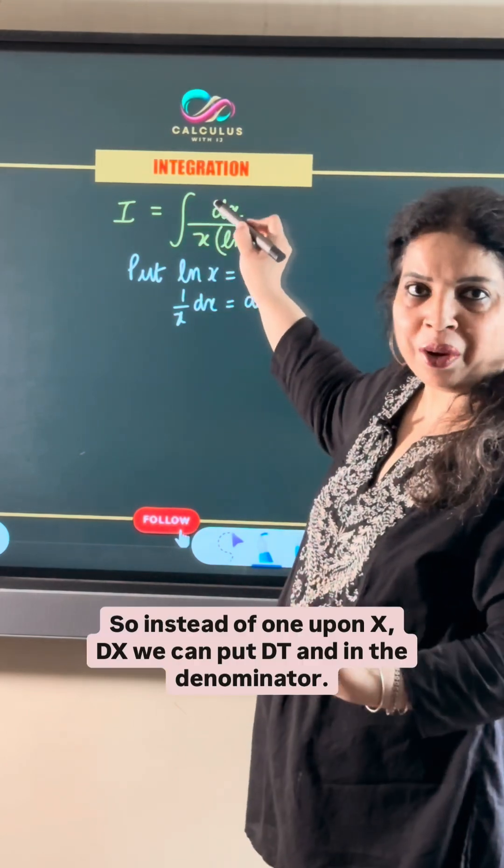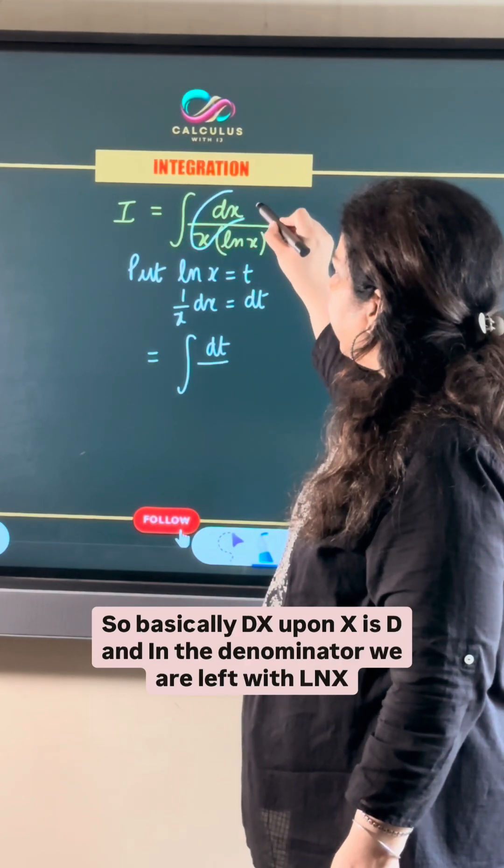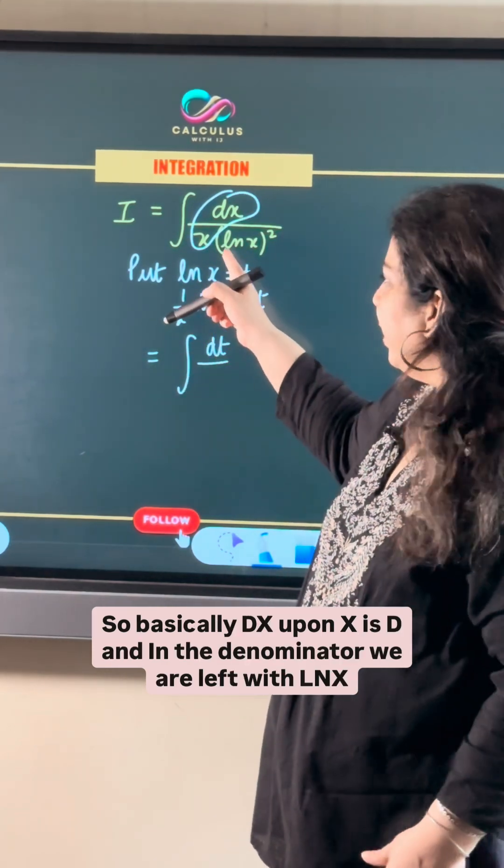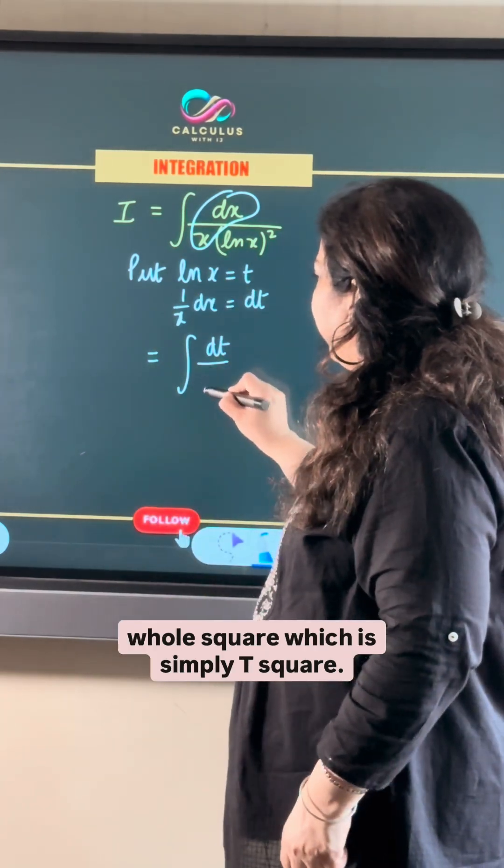So instead of 1 upon x dx, we can put dt. And in the denominator, basically dx upon x is dt and in the denominator, we are left with ln x whole square, which is simply t square.